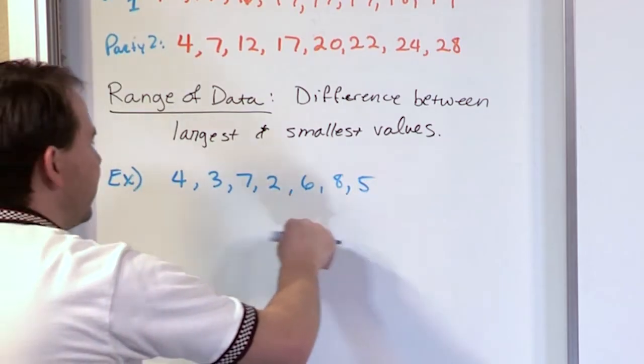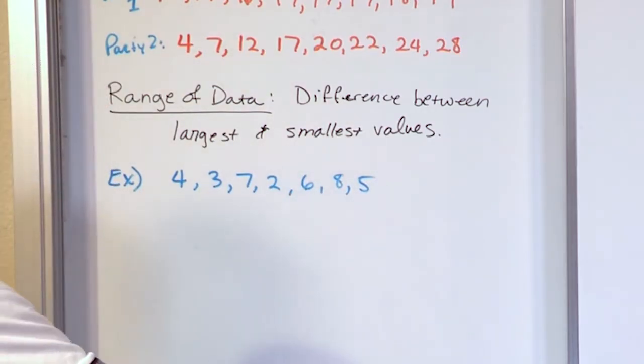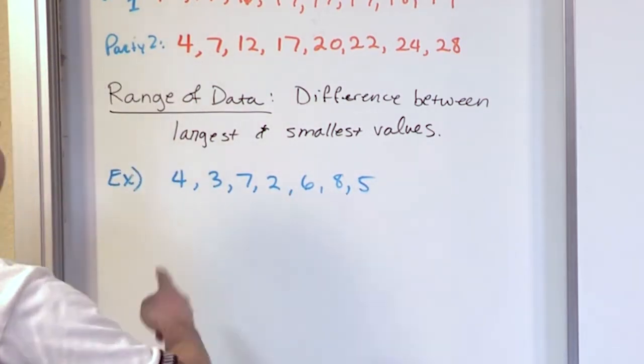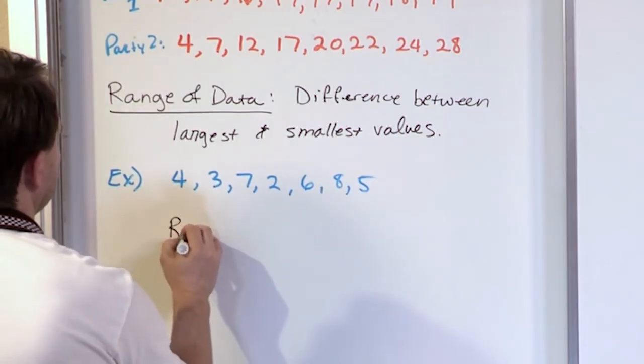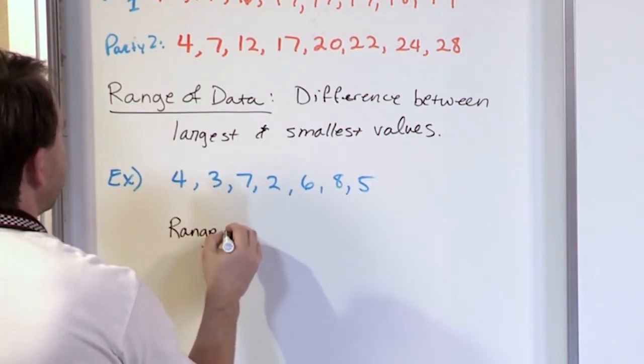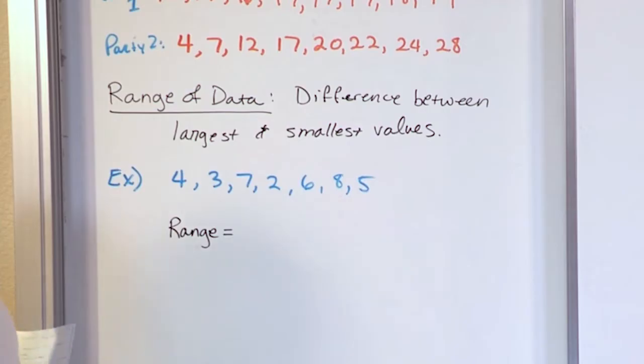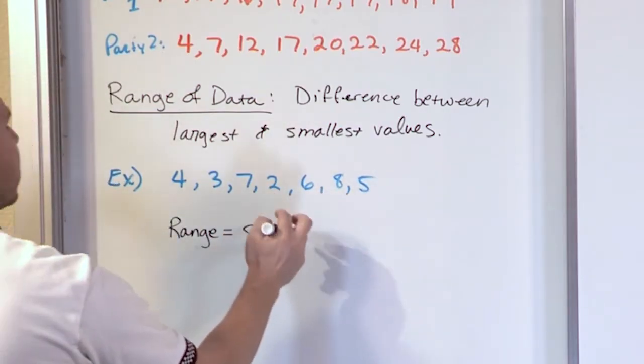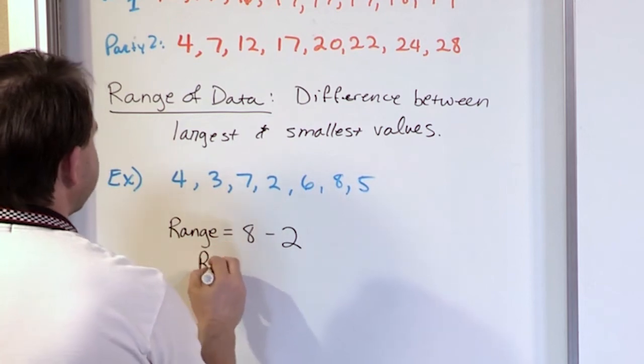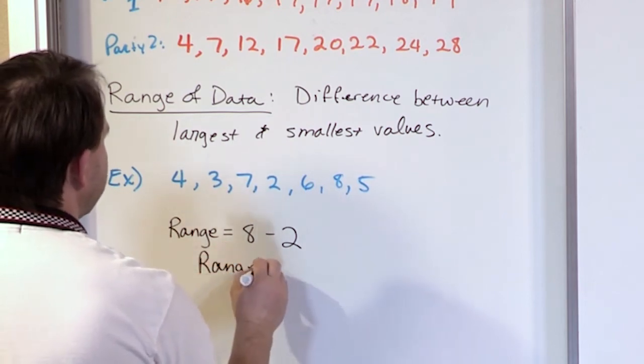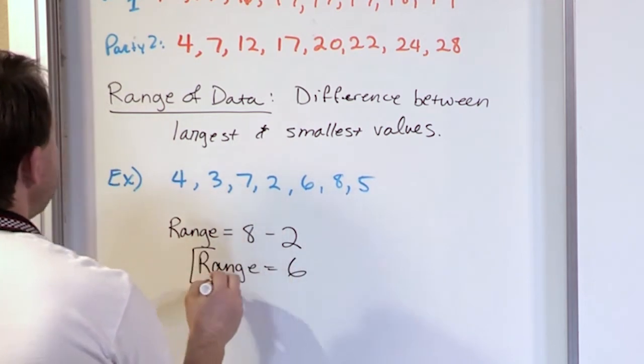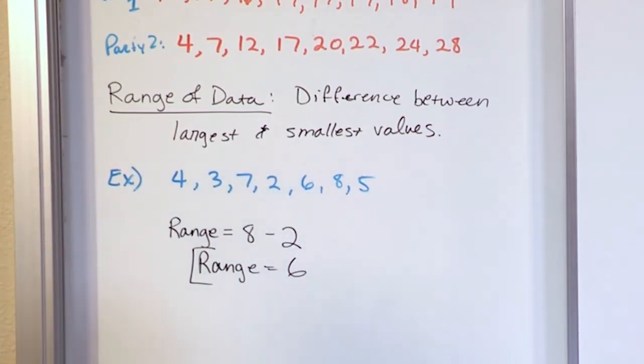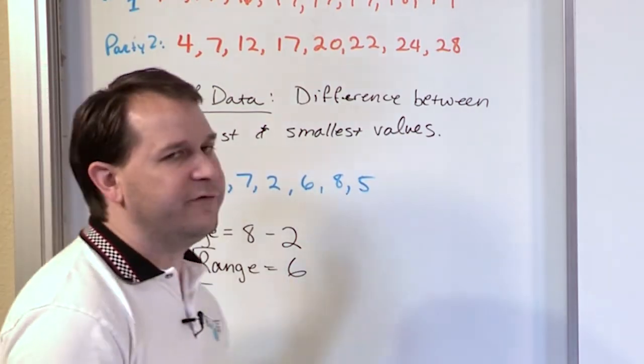But I've gathered this data and I would like to figure out how dispersed it is. And so we can calculate the range by being the largest data, which in this case is 8, minus the smallest, and the smallest is 2. So in this case, the range is equal to 6.